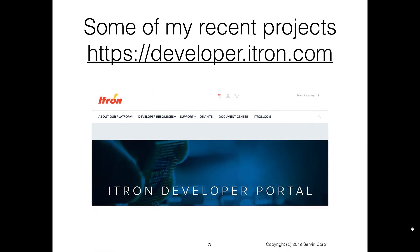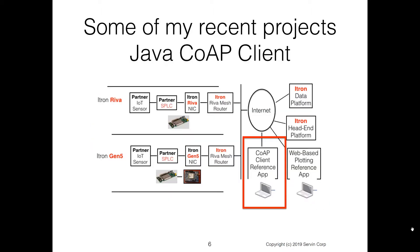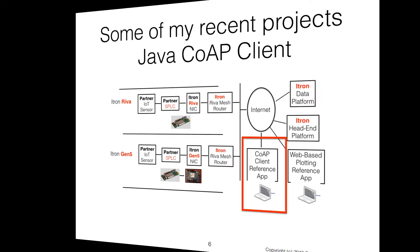One of my recent projects that has used Java is from developer.itron.com. The CoApp client is written in Java — it's a Java app that uses CoApp, the Constrained Application Protocol, to go over the internet and connect to IoT devices that are running over a mesh network.